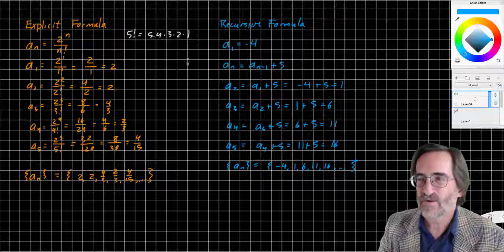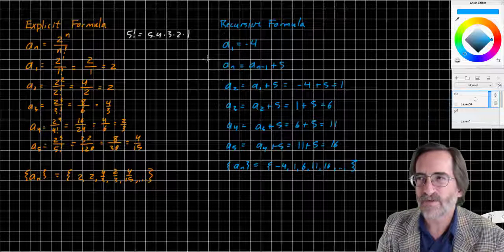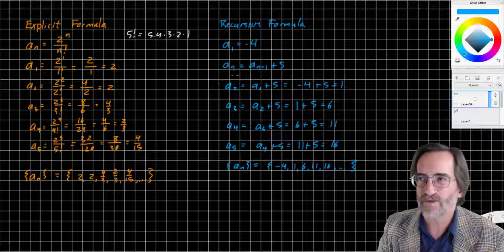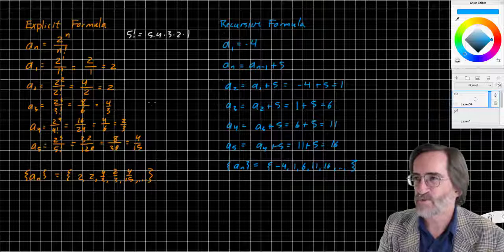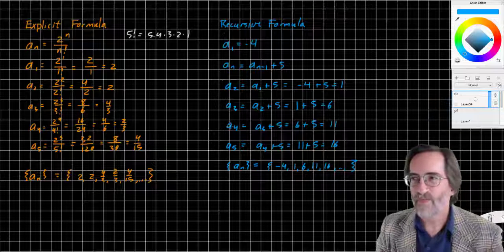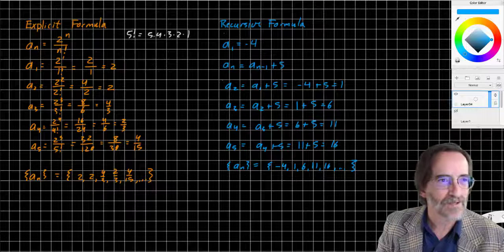Explicit versus recursive. Recursive oftentimes is easier to work backwards and figure out. Explicit is more difficult, but it is also generally more useful. So that's what we're talking about in this lesson.